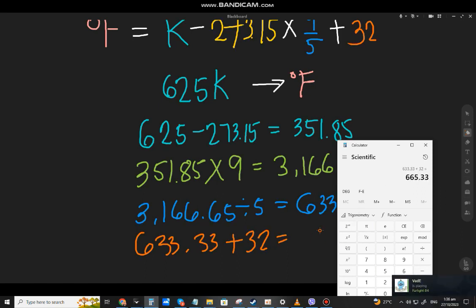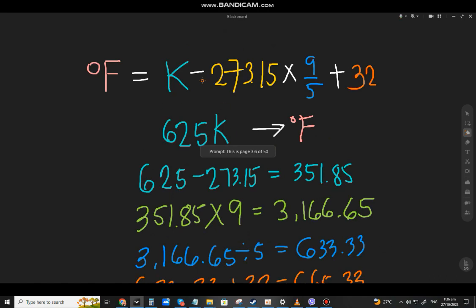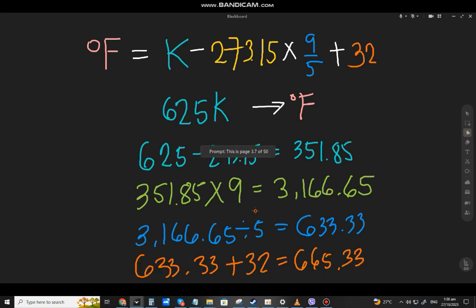That is 665.33. So what we did: 625 Kelvin minus 273.15, we multiply by 9, divide by 5, that's the answer, then we add 32.